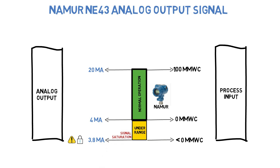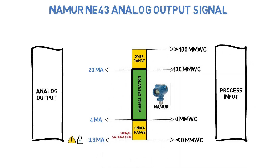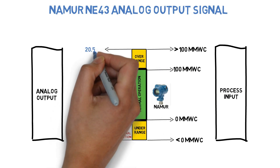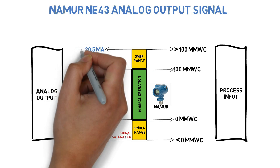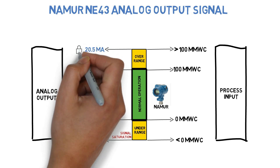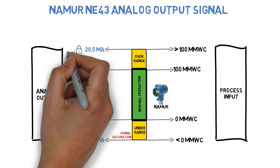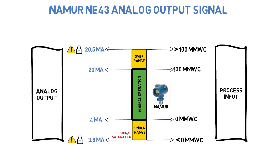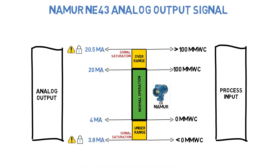If the process input increases above the upper range value of the transmitter, the analog output also increases between 20 and 20.5 mA. If the process input exceeds the upper range value, the analog output holds at 20.5 mA with a warning to the control unit. This over-range signal is also referred to as signal saturation.